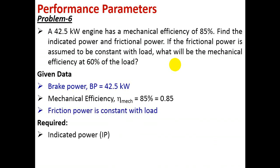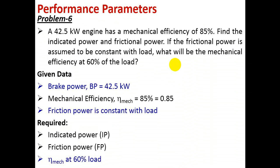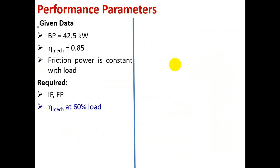The required data is indicated power IP, friction power FP, and mechanical efficiency at 60 percent load. The first part is easy — finding IP and FP. You know mechanical efficiency and you know BP. Substitute in the formula: mechanical efficiency equals BP divided by IP, and we can find IP. Once IP is known and BP is known, we can find FP.